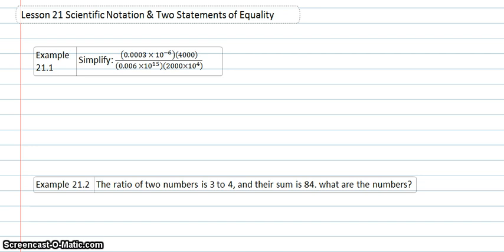The first example is simplifying 0.003 times 10 to the negative 6 times 4,000 over 0.006 times 10 to the 15th times 2,000 times 10 to the 4th.